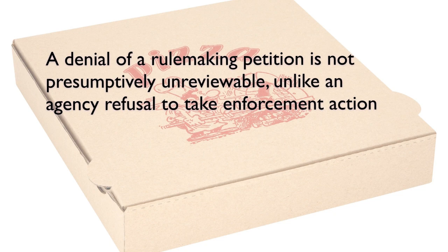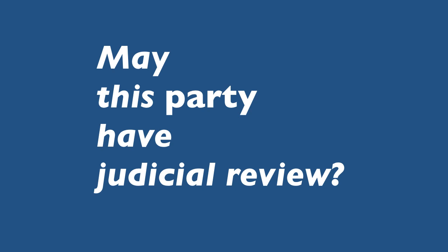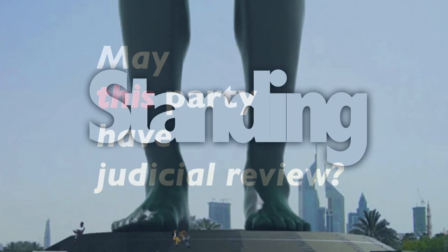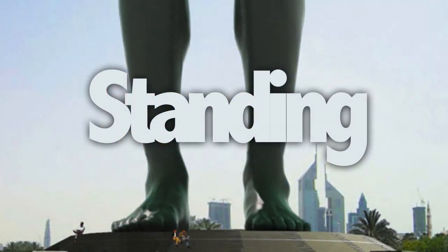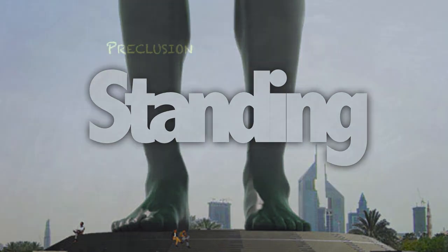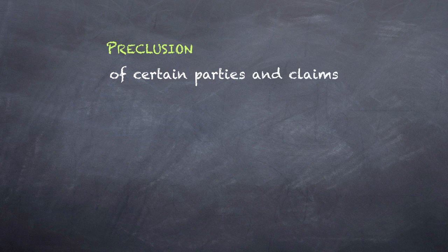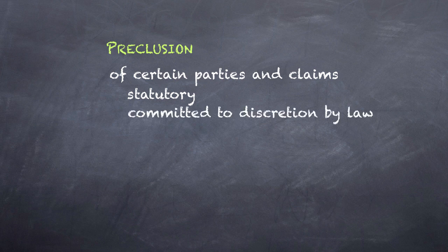Let's put the issue of preclusion aside. Now we turn to the question: may this party have judicial review? This is the issue of standing to sue. We want to distinguish preclusion of certain parties and claims — statutory or committed to discretion by law — and the issue of standing. Standing is an issue that arises under Article III.